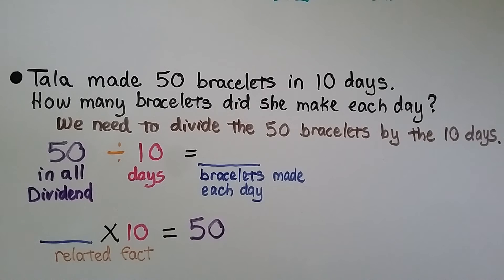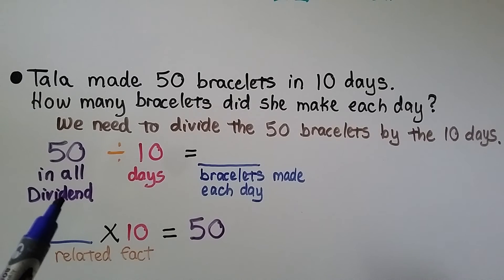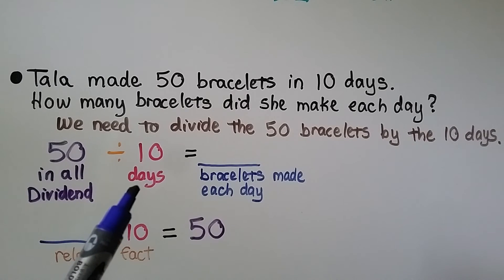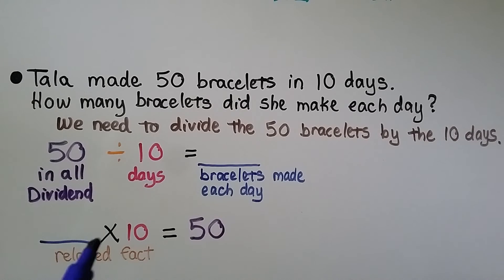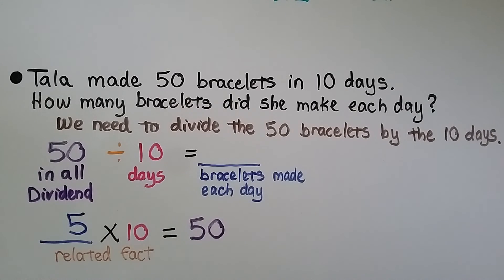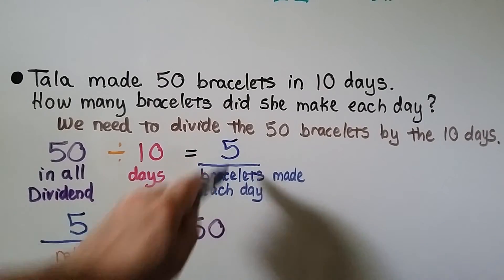Tala made 50 bracelets in 10 days. How many bracelets did she make each day? We divide 50 bracelets by 10 days. Using a related fact, some number times 10 is equal to 50 — I remember that 5 times 10 is 50. That means 50 divided by 10 is equal to 5. She made 5 bracelets each day.